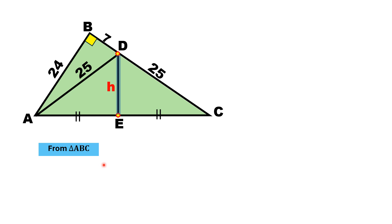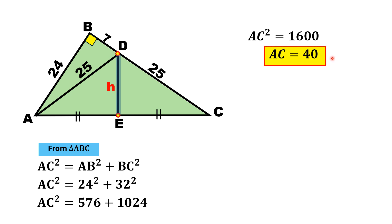Using the Pythagorean theorem on this right triangle, we have AC² = AB² + BC². AB is 24 and BC is 32. Substituting the values and simplifying, we get AC² = 576 + 1024 = 1600. Taking the square root on both sides, AC = 40.